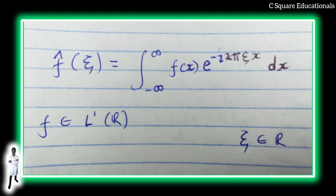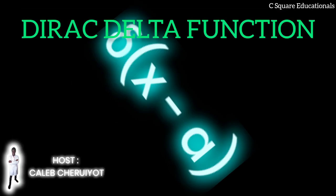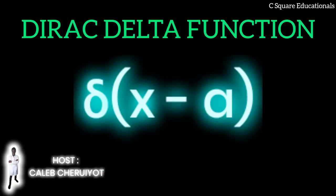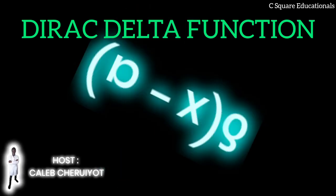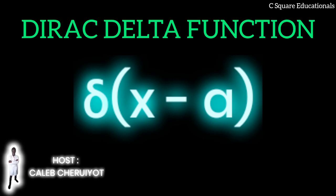For example, many relatively simple applications use the Dirac delta function, which can be treated formally as if it were a function, but the justification requires a mathematically more sophisticated viewpoint. The Fourier transform can also be generalized to functions of several variables or n-dimensional space, sending a function of three-dimensional position in space to a function of three-dimensional momentum, or a function of space and time to a function of four-momentum.